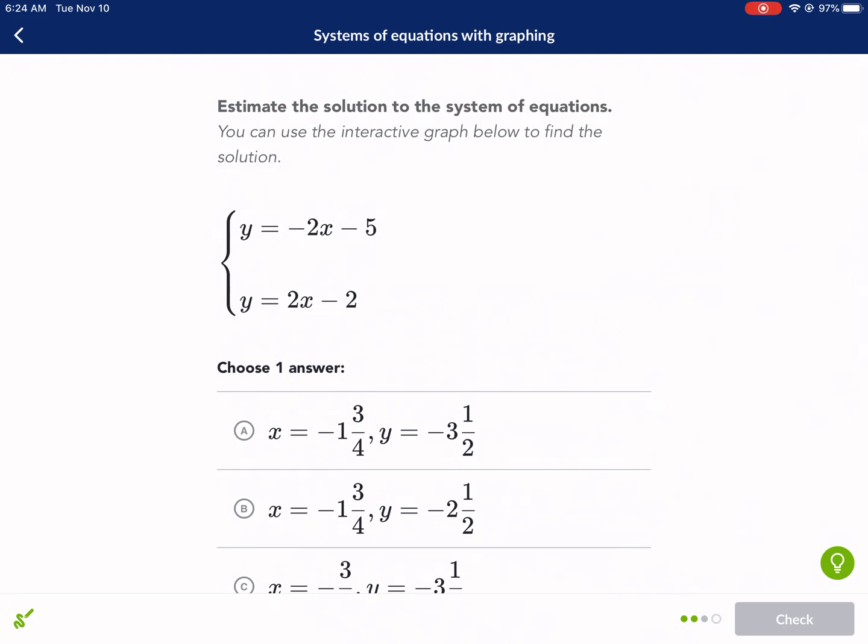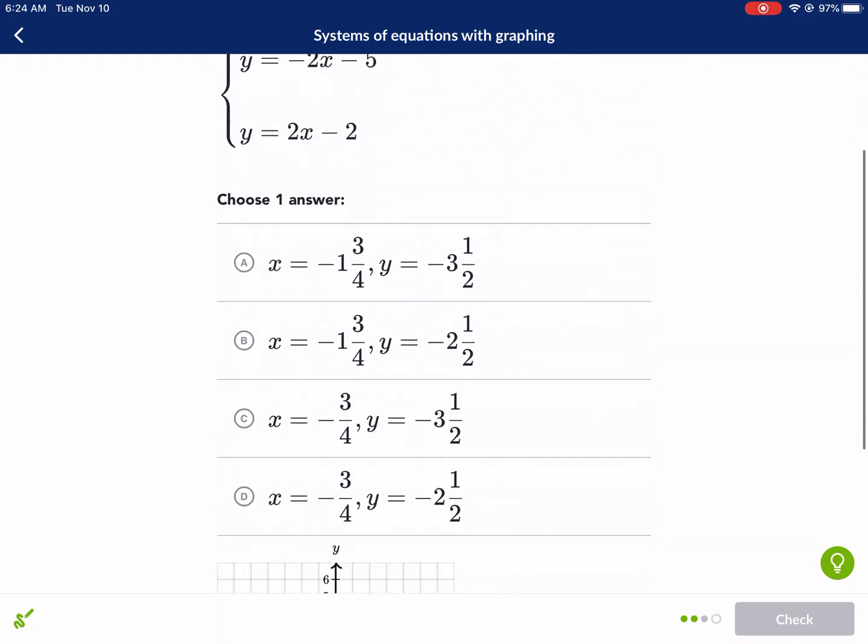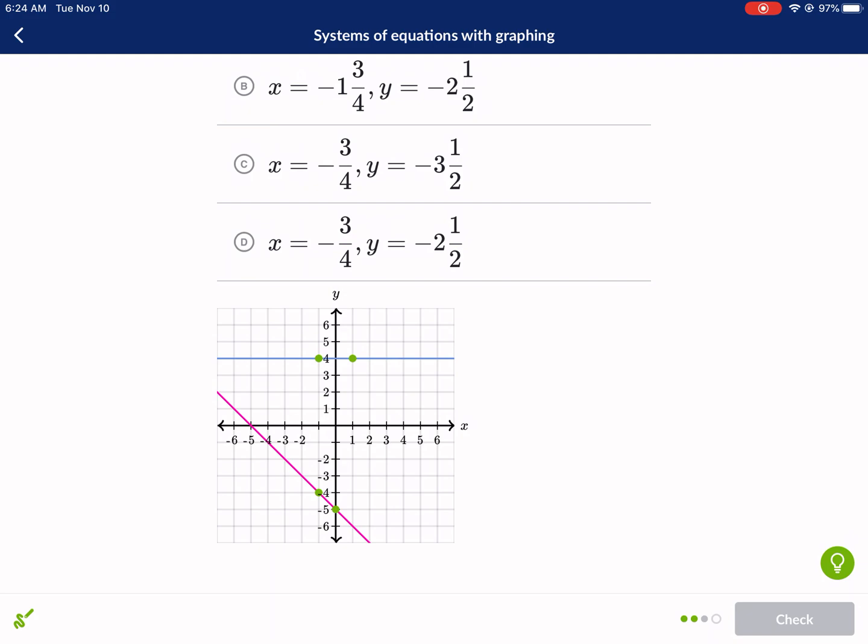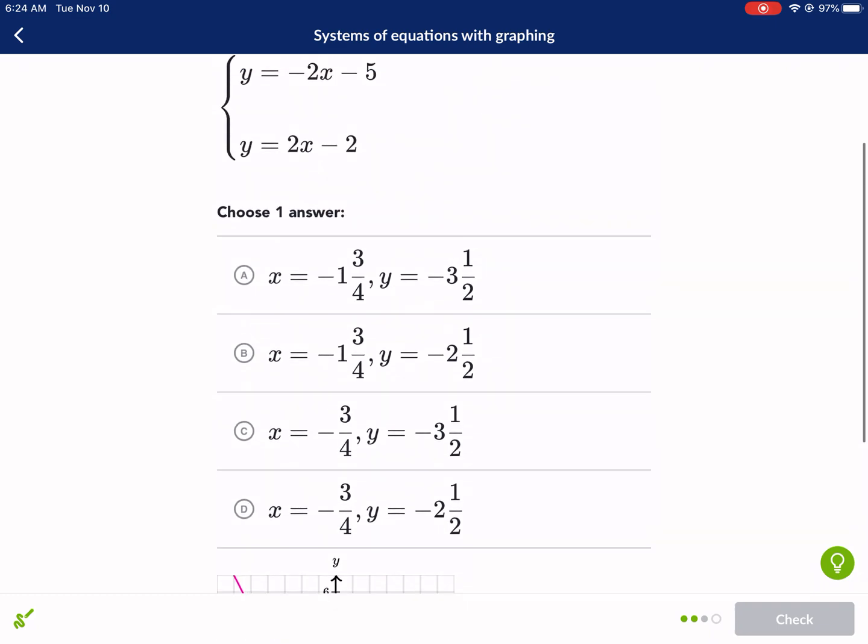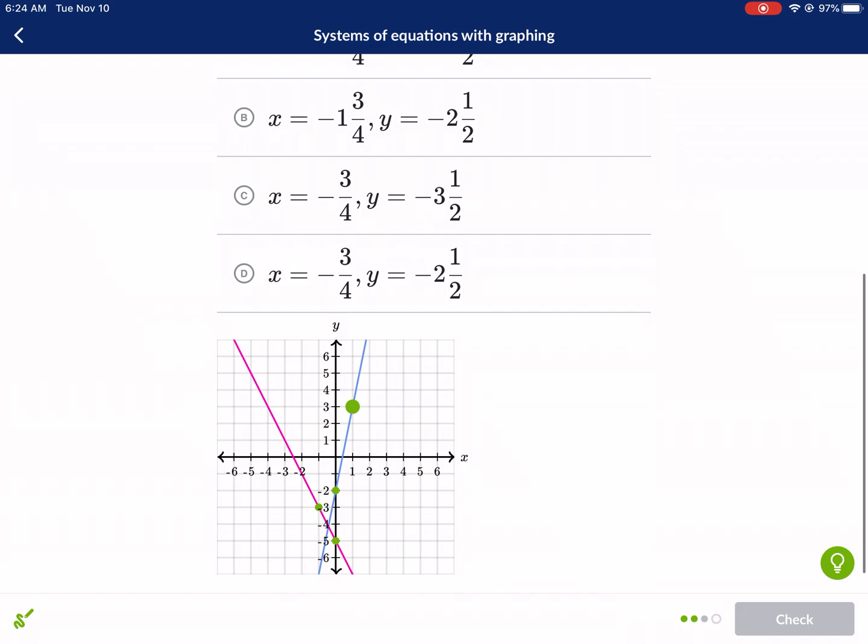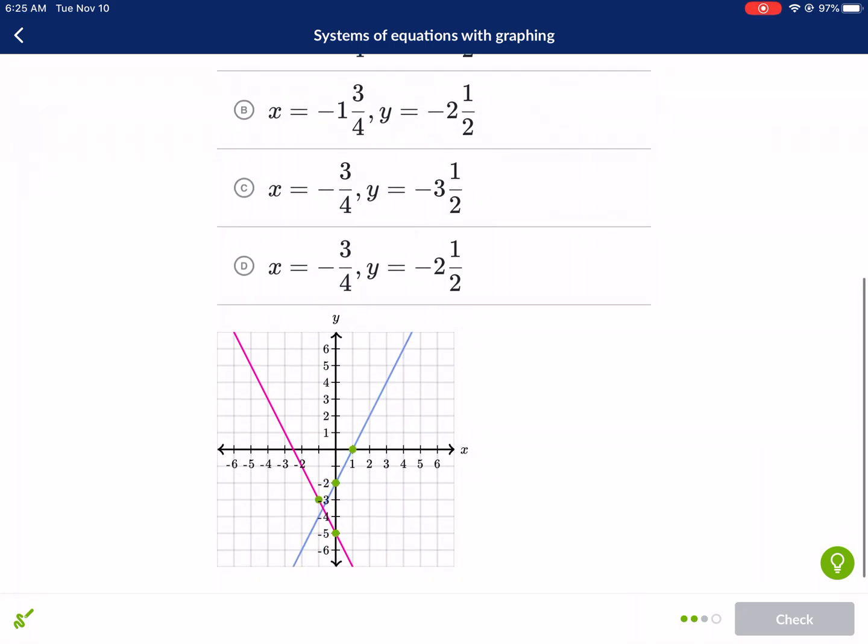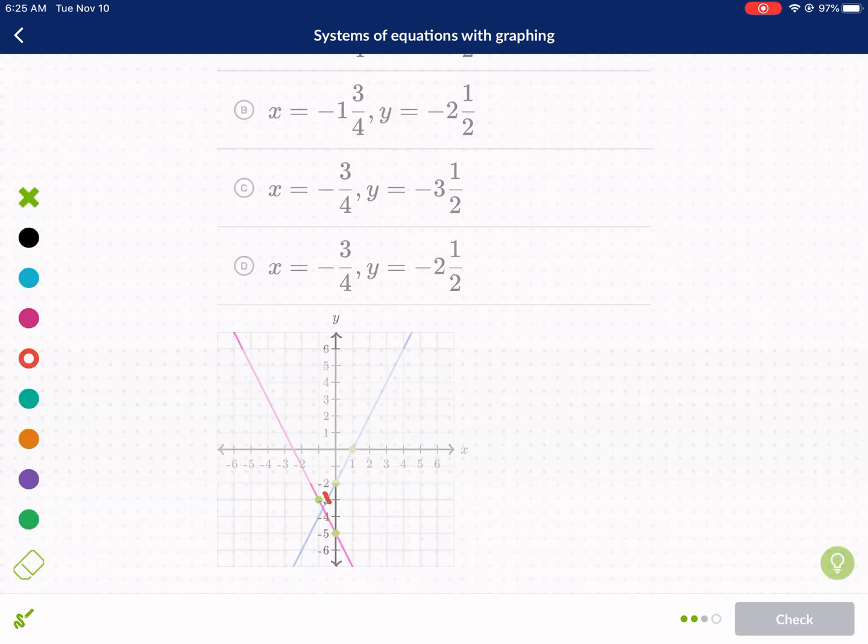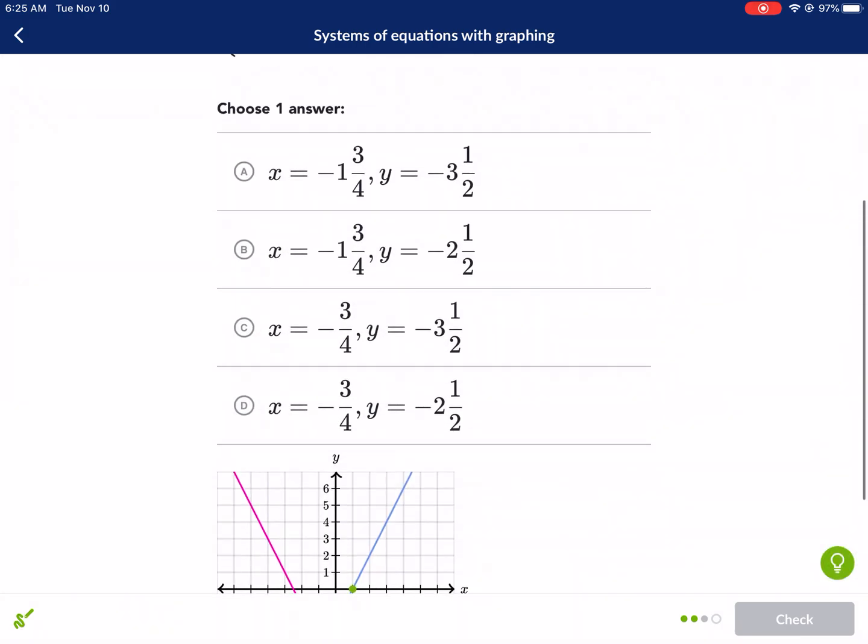Okay. Estimate the solution to the system. So we have negative 2x minus 5. So negative 5 and we're going to go down 2 to the right 1. Or we can go in reverse which is up 2 and to the left 1. Very important to be able to go both ways. Negative 2 over 1 with the y-intercept negative 5. Then we have negative 2 with our y-intercept and up 2 over 1. So it's in a different spot. It's a fraction. So it looks like negative 3 over 4 for the x. And for the y, it looks like it is a little past 3. So maybe 3 and a half. So I think we found our answer. It looks like c is our answer there.